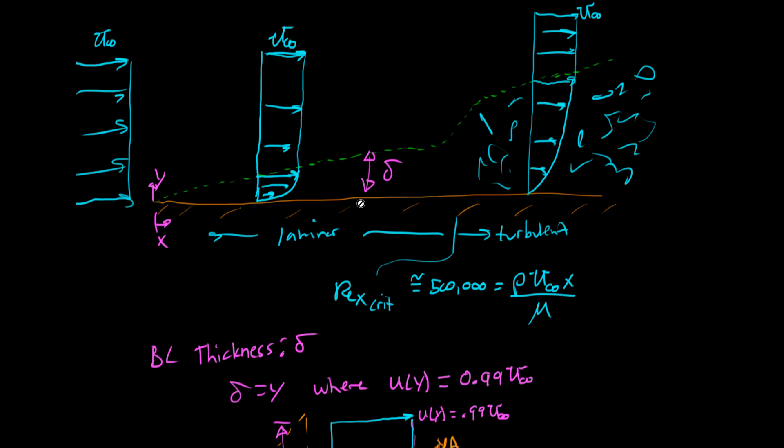And as we move down the plate, what happens is that information gets communicated farther and farther up. And so we get this little region down here that's been affected by viscosity. And if we move far enough downstream, we'll see that that region has gotten much thicker. In fact, we have this thing called the boundary layer thickness, which I've drawn with this dashed line, which is usually called delta.